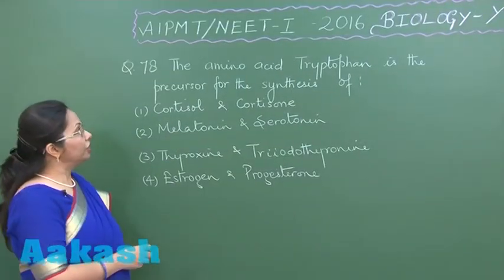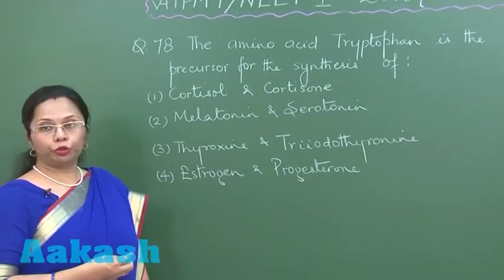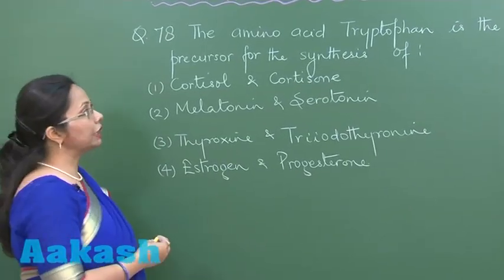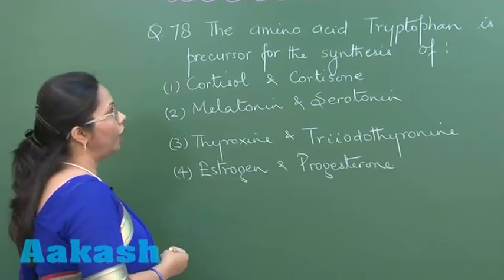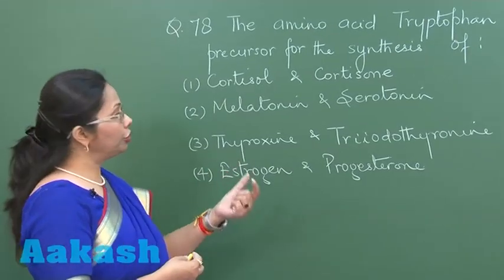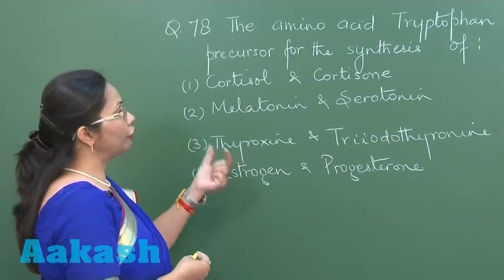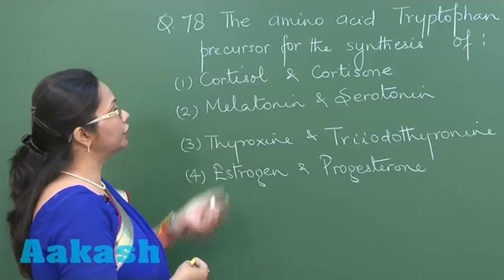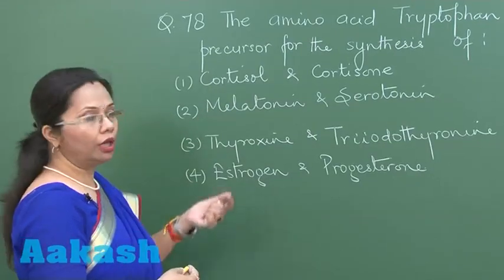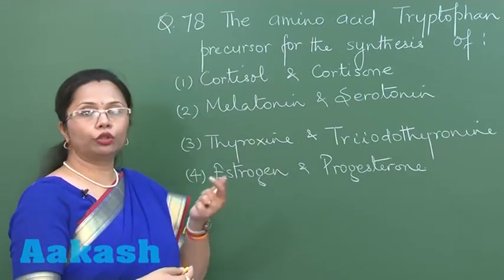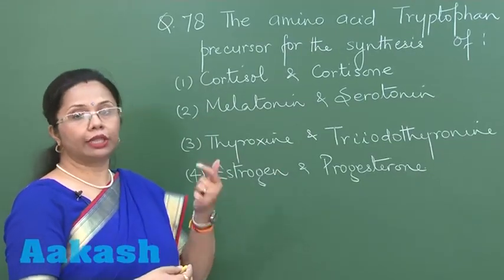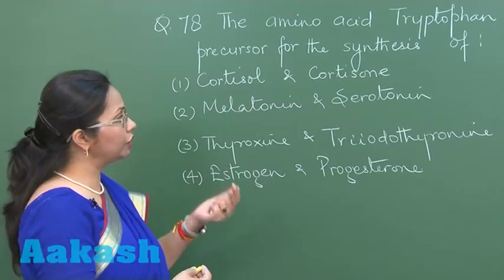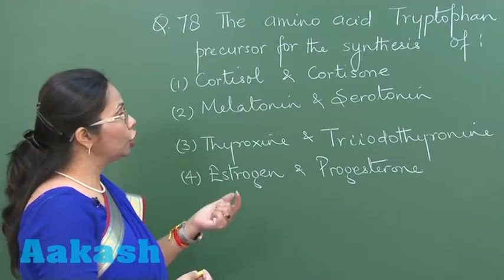In this question, the amino acid tryptophan is the precursor for the synthesis of which hormones? Tryptophan is utilized for the formation of the pineal hormones, that is melatonin and serotonin. Although serotonin is secreted from a number of other cells as well, like mast cells, basophils, and so on.